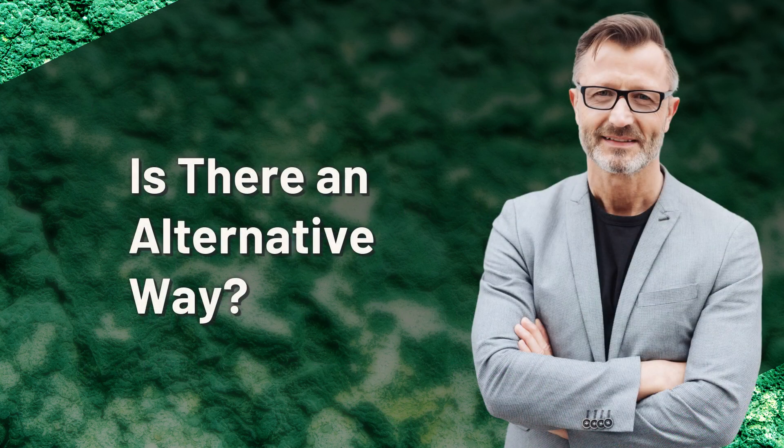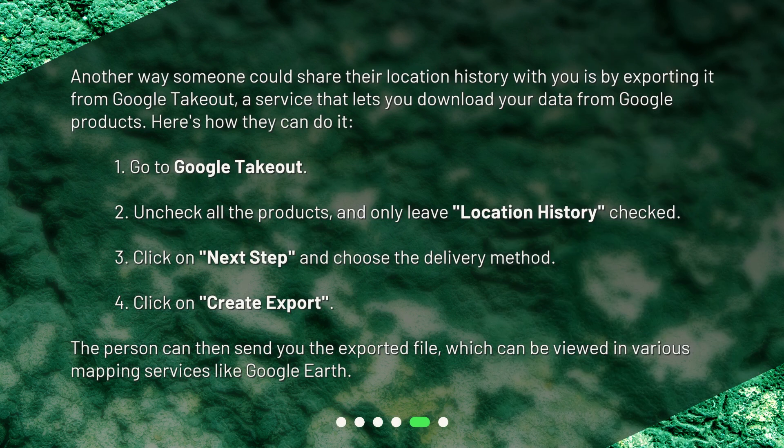Is there an alternative way? Another way someone could share their location history with you is by exporting it from Google Takeout, a service that lets you download your data from Google products. Here's how they can do it. 1: go to Google Takeout. 2: uncheck all the products and only leave location history checked. 3: click on next step and choose the delivery method. 4: click on create export. The person can then send you the exported file, which can be viewed in various mapping services like Google Earth.